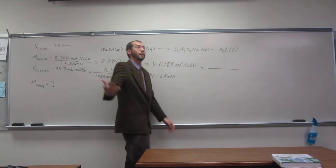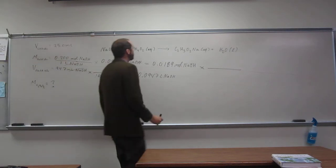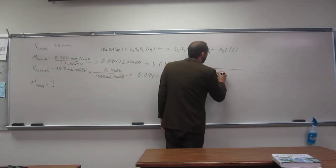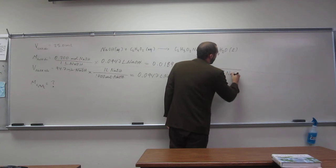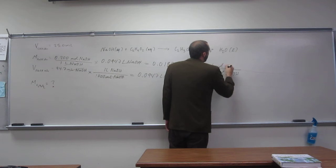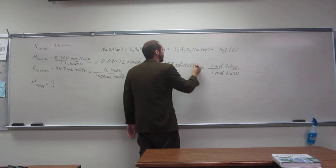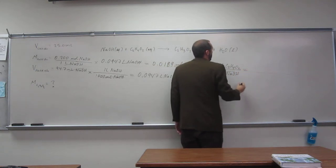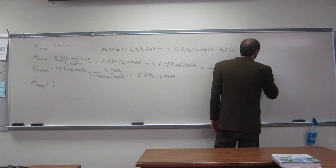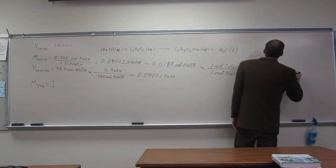So, one mole of NaOH from the reaction equation gives one mole of C2H4O2, which is acetic acid. So, whatever this is. So, we've got 0.0189 moles of C2H4O2. And we've got mLs here.